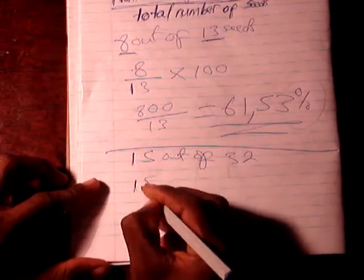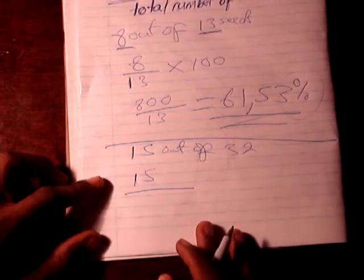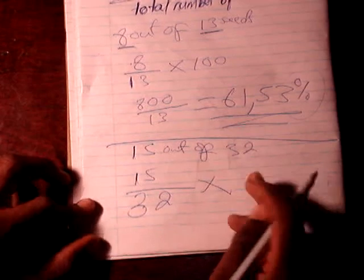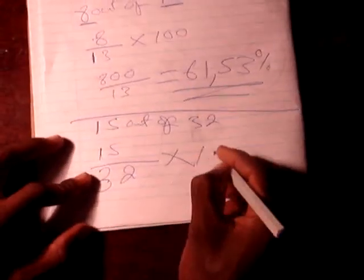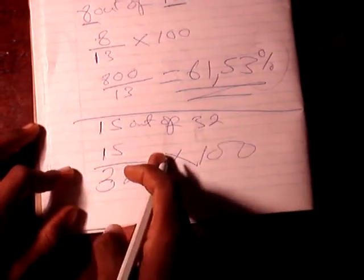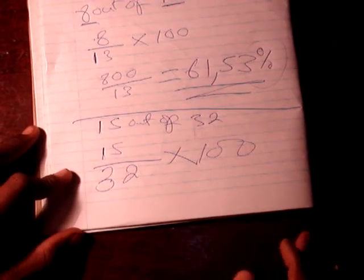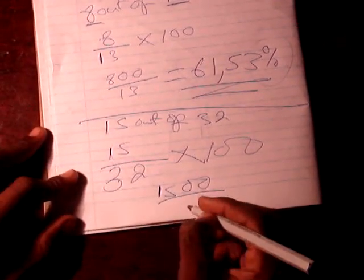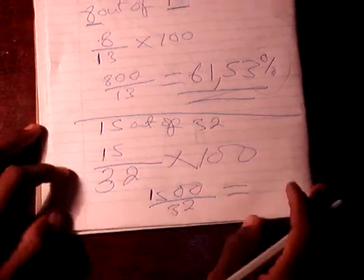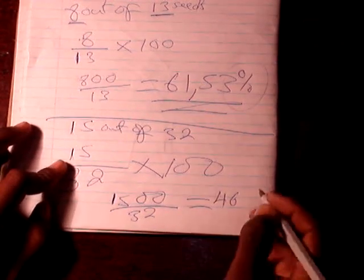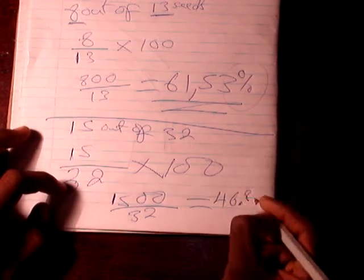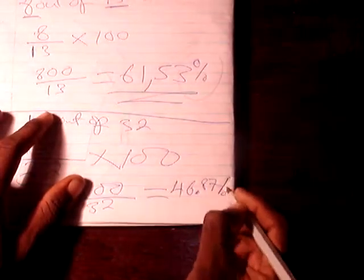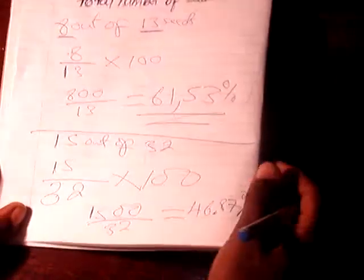Next example: 15 seeds have germinated and the total number of seeds is 32. So we calculate 15 times 100, which is 1500, divided by 32. That gives us 46.87%. Don't forget to write your percentage sign — we are finding a percentage.